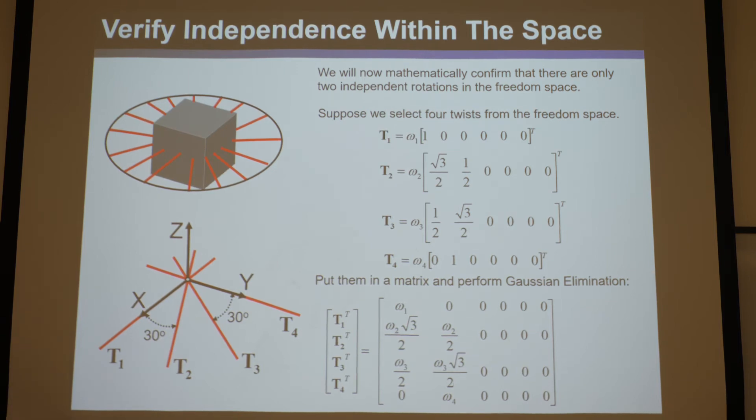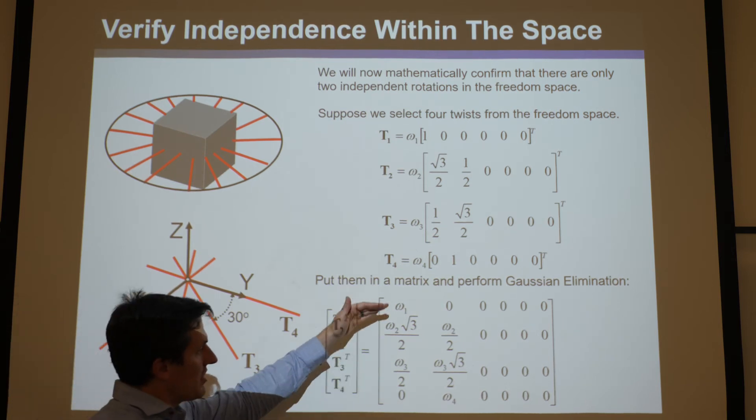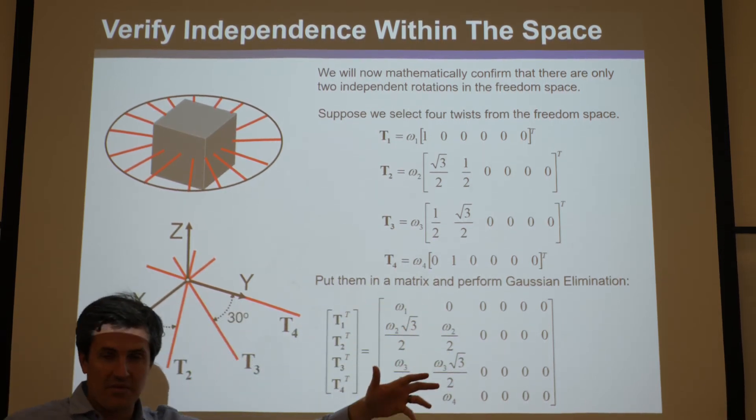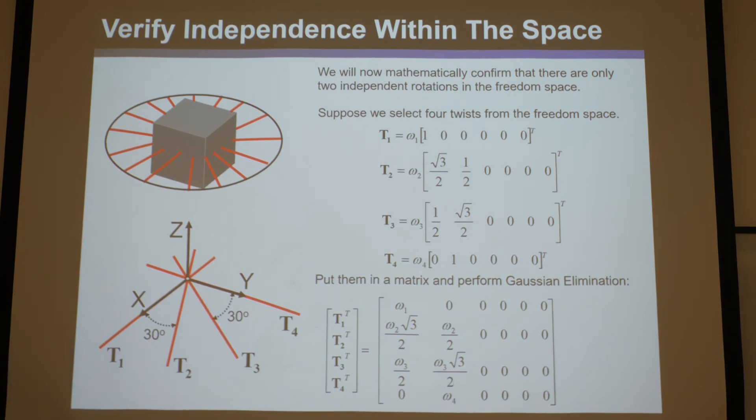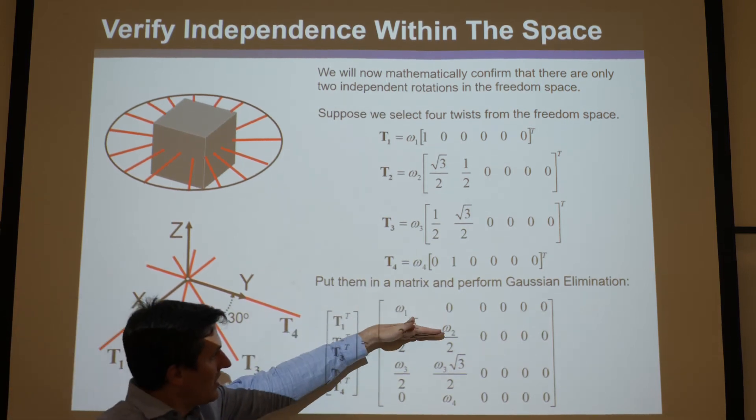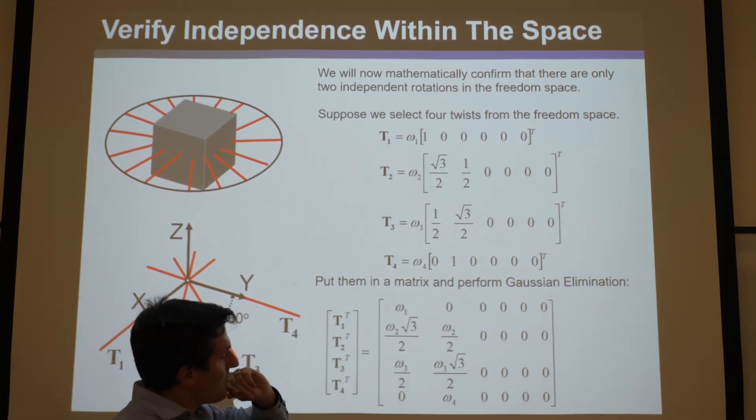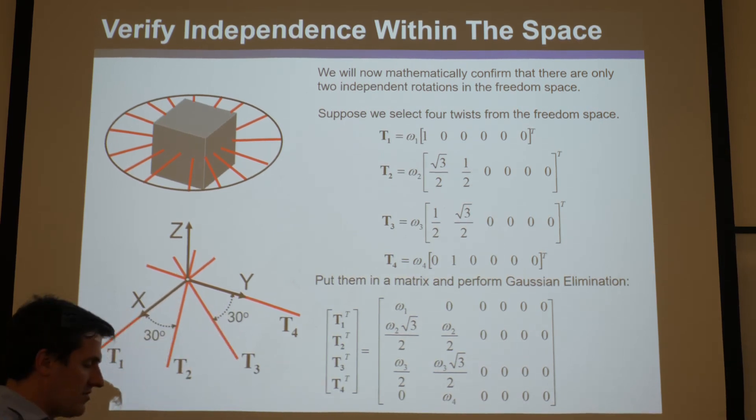And then what you can do is you can use Gaussian elimination. Now, if you don't know Gaussian elimination, this is the one thing that would be nice to have taken linear algebra for for this course. It's very easy to learn, so don't worry if you haven't taken linear algebra. You can definitely learn this. You can just look it up online and teach yourself Gaussian elimination. But what you do is if you have a bunch of vectors, the whole reason you do Gaussian elimination is to find out how many of those vectors you put in that matrix are independent. So right now we've got four vectors in there, and we're going to do Gaussian elimination, find out how many are independent.